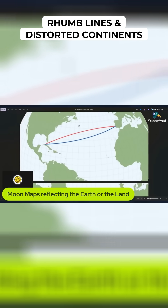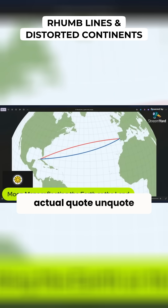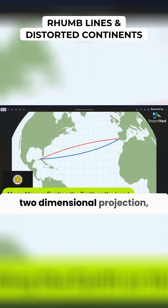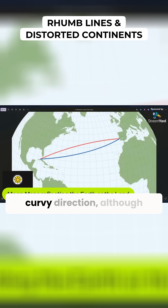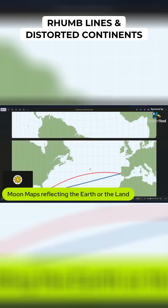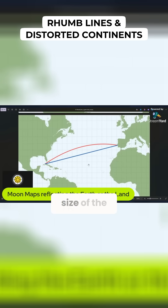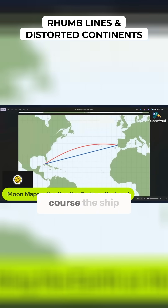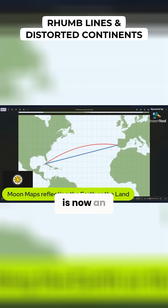So the rhumb line versus the great circle arc: on an actual globe map — granted it's a two-dimensional projection — the great circle is closer to straight and the rhumb line takes more of a curvy direction, although they both have a bit of a curve. But then on the Mercator projection, when he changes the size of the squares for the longitude lines, the rhumb line — the loxodrome, the course the ship follows on an azimuth — is straight. And then the great circle arc, the shortest distance between two points on a globe, is now an arc.